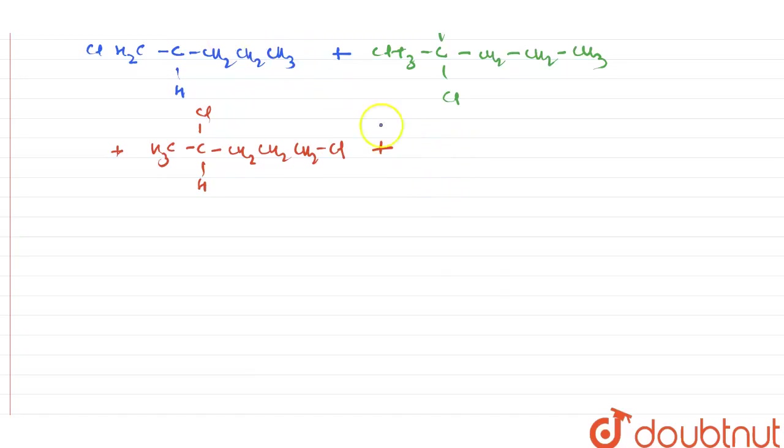That is, if I write the structure, CH3, C-Cl, H, CH, Cl, CH2, and CH3. So, including this, this is also chiral carbon. Therefore, two products will be possible, that is, two products, and they are stereoisomers.